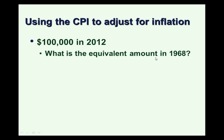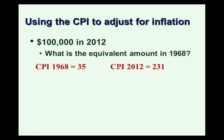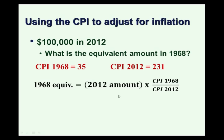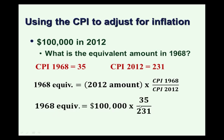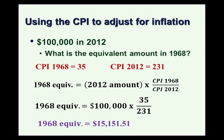We know it's got to be smaller than $100,000 because there's been a lot of inflation since 1968. Using CPI data, the CPI in 1968 is 35 and the CPI in 2012 is 231. The 1968 equivalent is the 2012 amount times the CPI ratio — so $100,000 times 35 over 231 — giving us a little over $15,000. So a salary of $15,000 in 1968 is about equivalent to $100,000 in 2012 in terms of buying goods and services. There are even online inflation calculators that will do these calculations automatically.